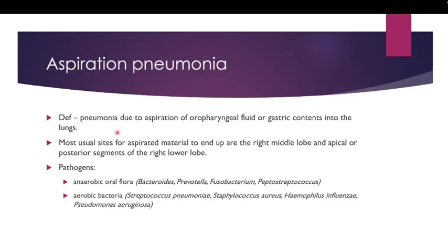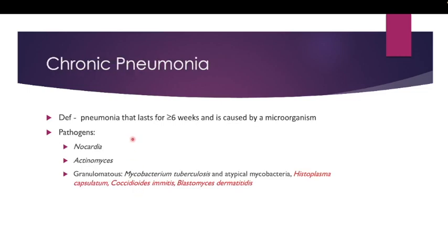Aspiration pneumonia is pneumonia due to aspiration of oropharyngeal fluid or gastric content into the lung. It usually affects the right middle lobe or apical or posterior segment of the right lower lobe. It is caused by anaerobic oral flora — for example, Bacteroides, Fusobacterium, Peptostreptococcus — and also aerobic bacteria such as Streptococcus pneumoniae, Staphylococcus aureus, Haemophilus influenzae, and Pseudomonas aeruginosa.